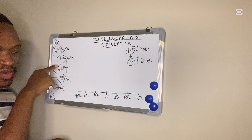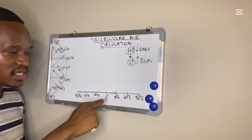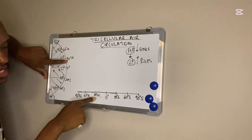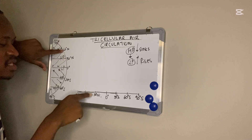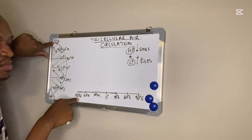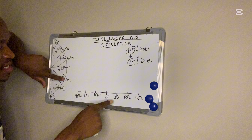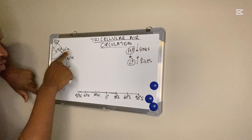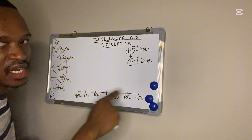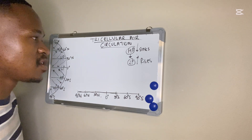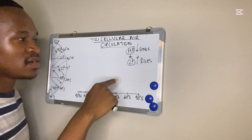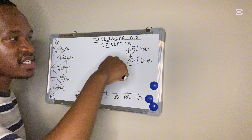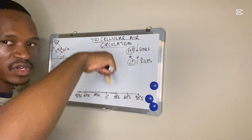This zero degree represents the equator. In the northern hemisphere I have 30 degrees north, 60 degrees north, and 90 degrees north on my line. On the other side I have 30 degrees south, 60 degrees south, and 90 degrees south. When we have a low pressure the air rises or ascends, but when there is a high pressure the air sinks or descends.